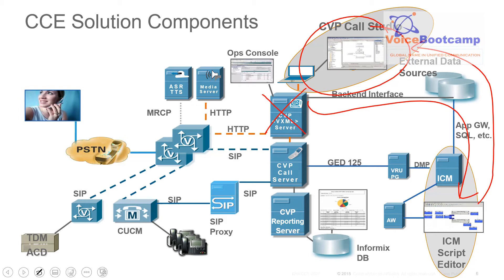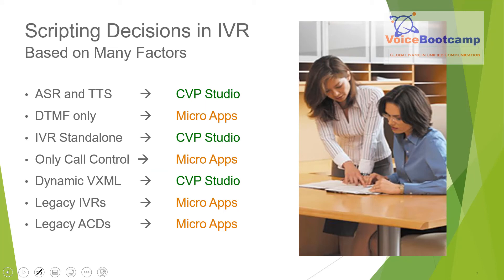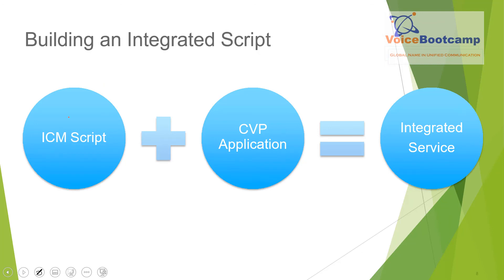When you develop a Call Studio script that is being integrated with an ICM script, we often call that an integrated service. Discrete decisions in the IVR will be based on what the user enters — you can collect digits from the user and make a decision based on that. You can use advanced speech recognition or text-to-speech. The value from the customer comes in either via DTMF format or text-to-speech format. When you use an ICM script plus the CVP application, we call that an integrated service.